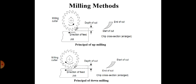Now we will see the differences between up milling and down milling one by one. The first difference: in up milling, the thickness of the chip is minimum at the start of cut and maximum at the end of cut, as shown in the top figure. At the start of the cut, the material thickness is very short.